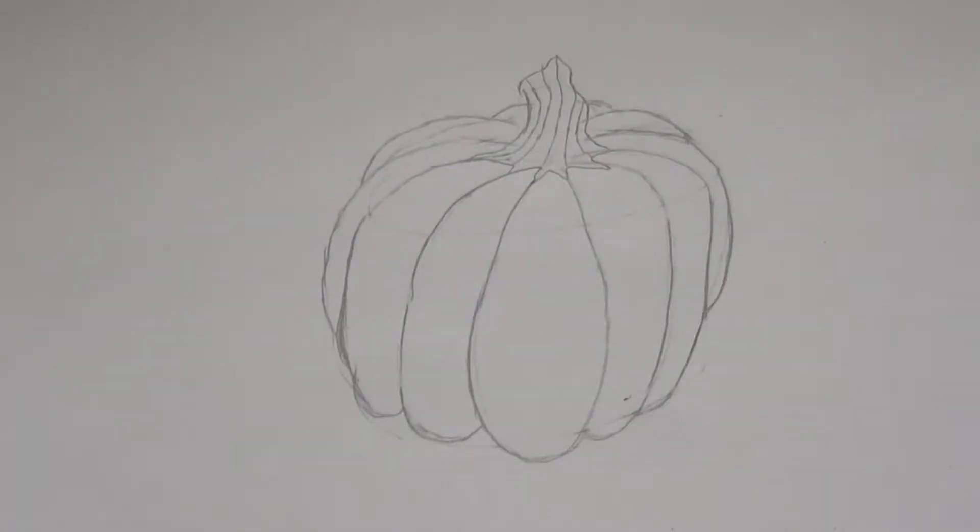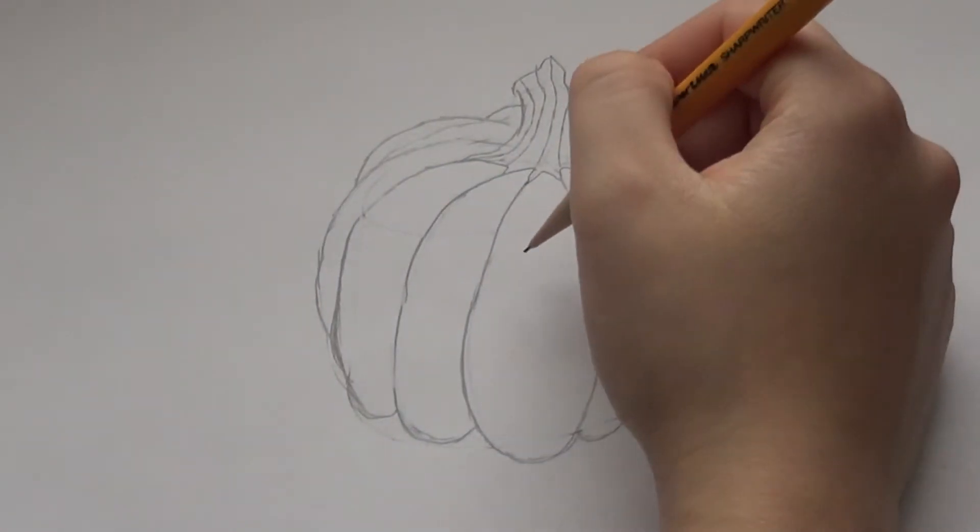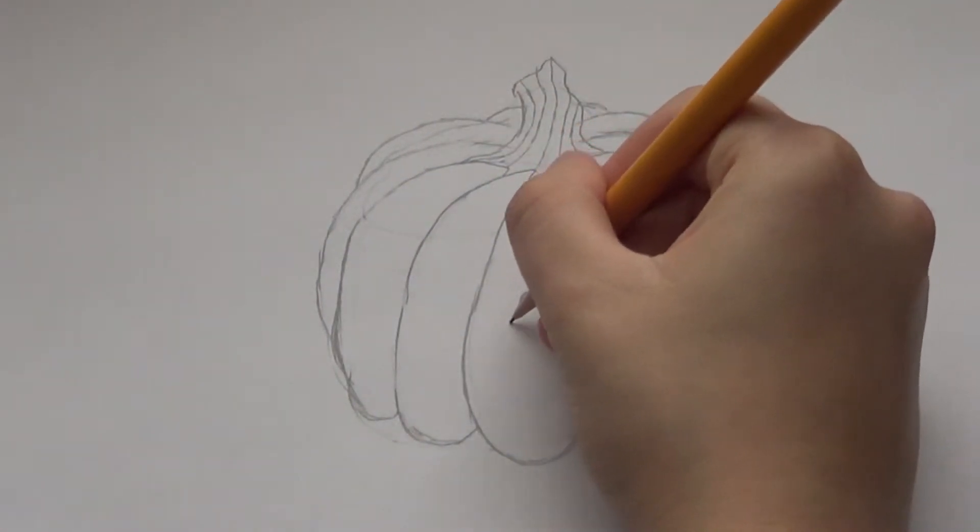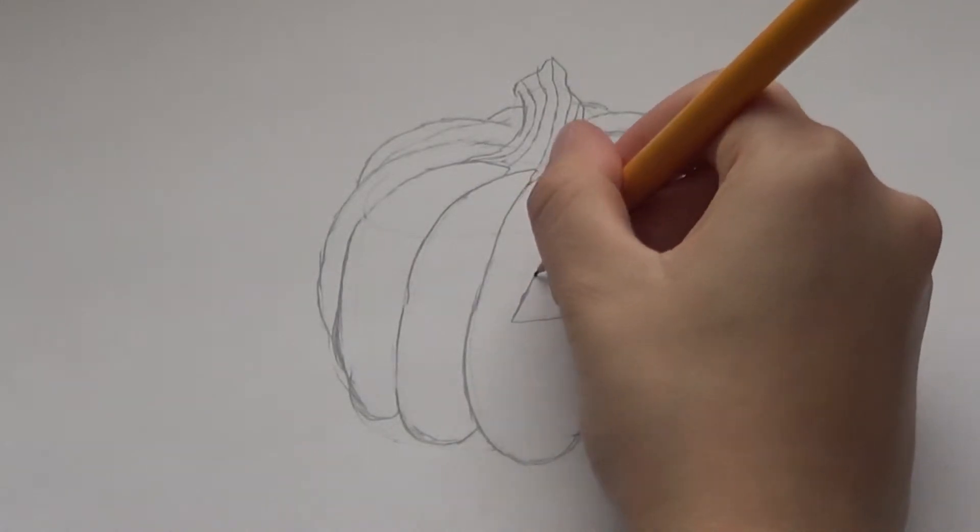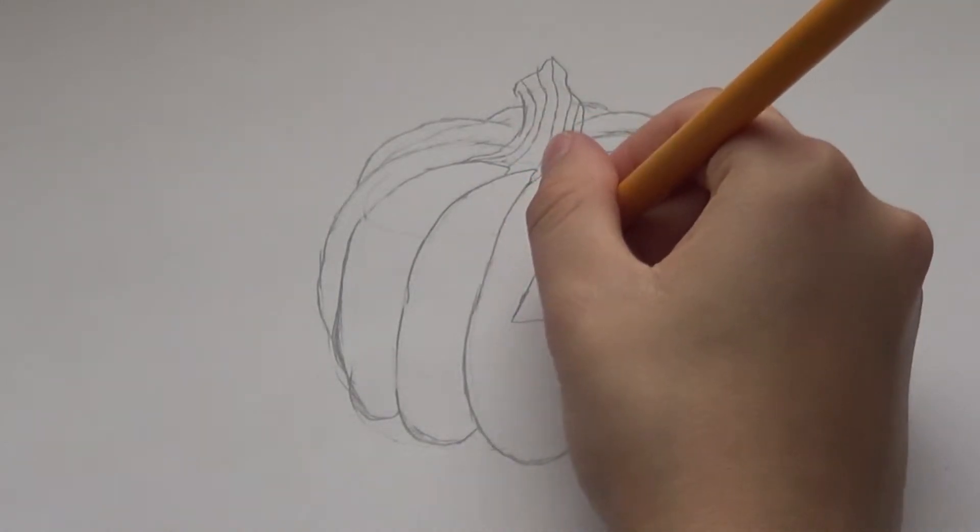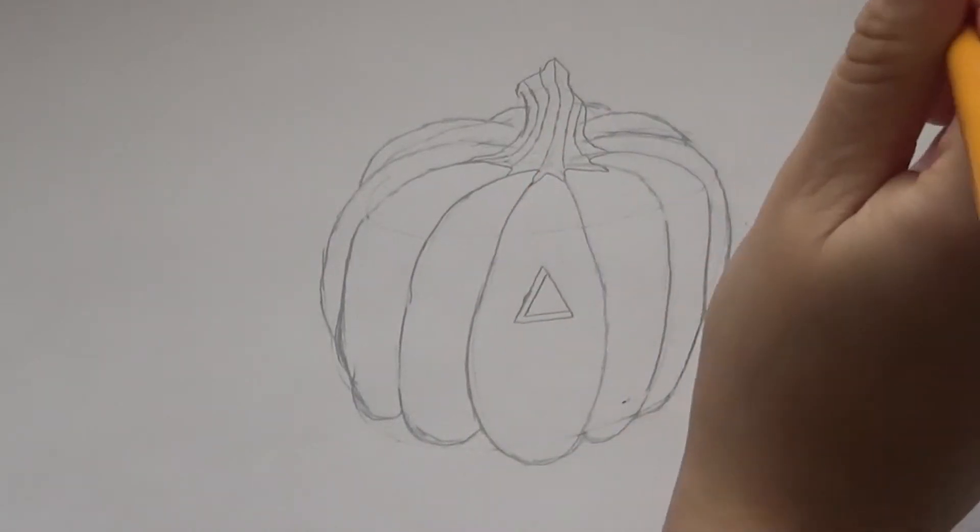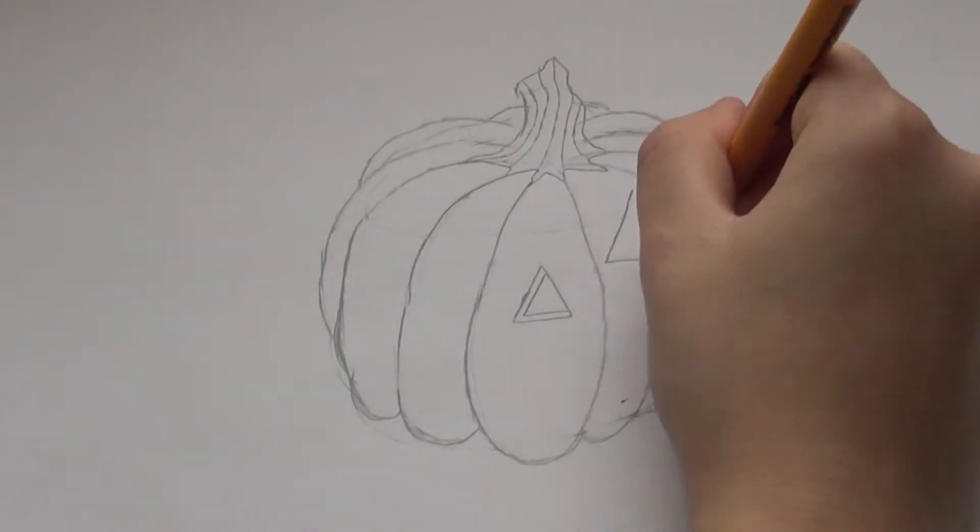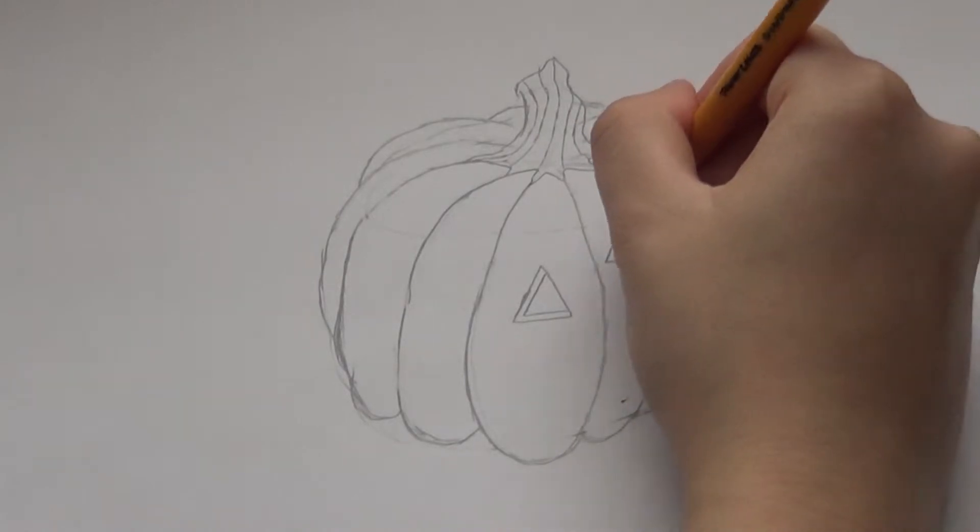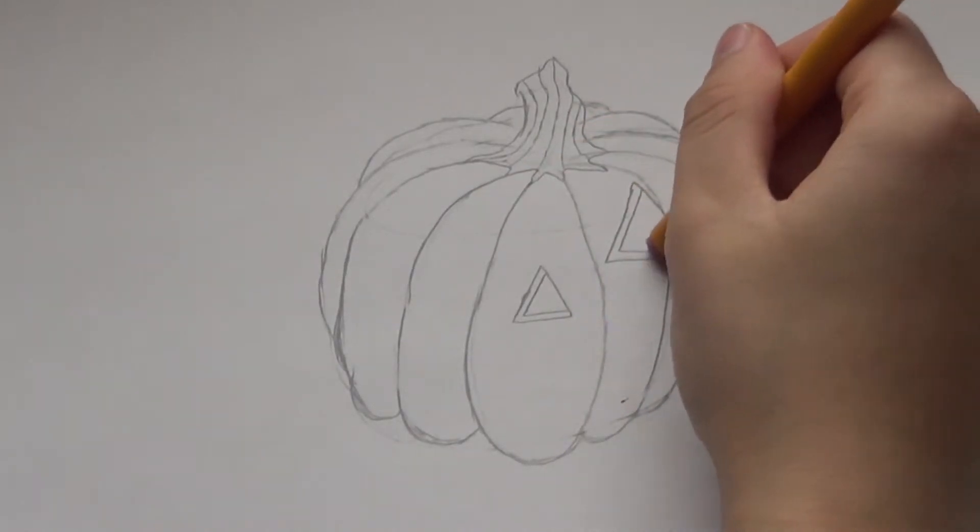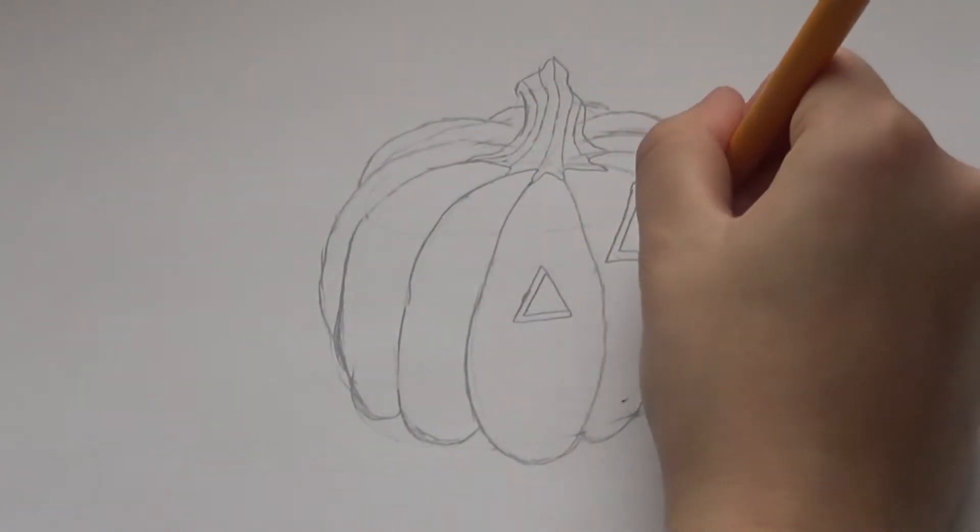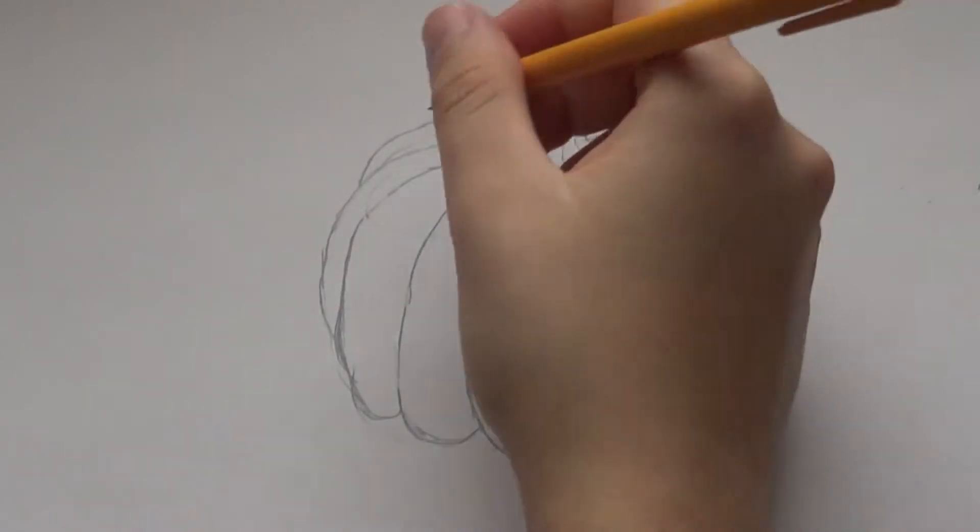Now I'm going to turn this pumpkin into a jack-o-lantern by adding eyes, a nose, and a mouth. So I'm going to make the eyes into triangles and then to make them look a little more three-dimensional, I'm going to draw some of the lines of the triangle again inside it a little bit. So this is like drawing the inner edge of it.